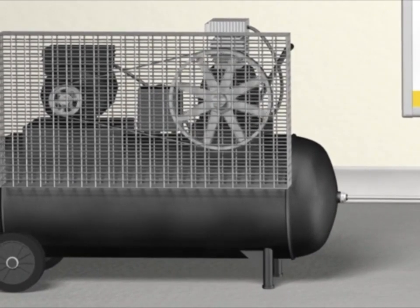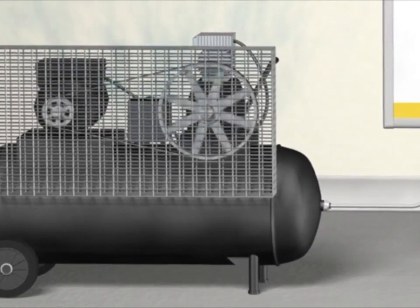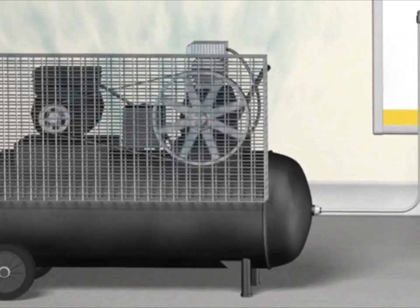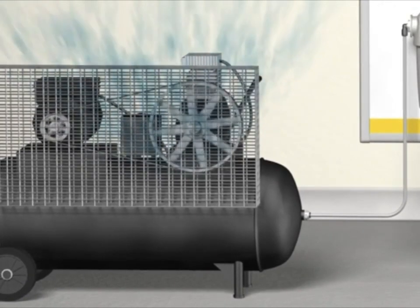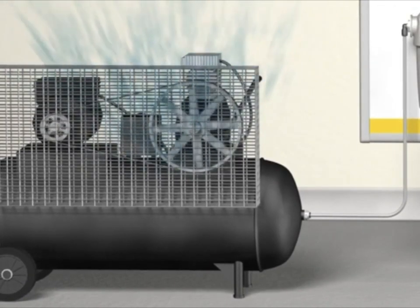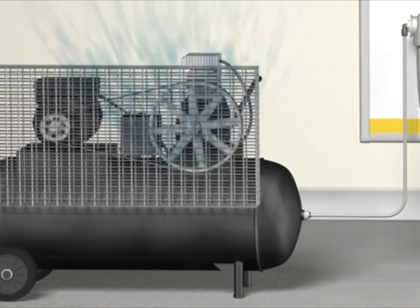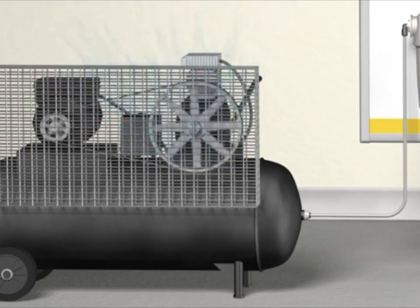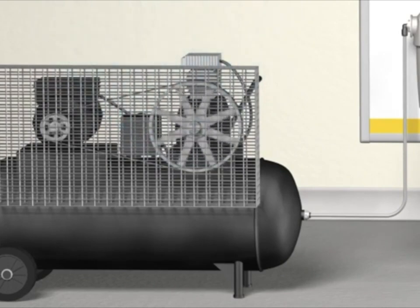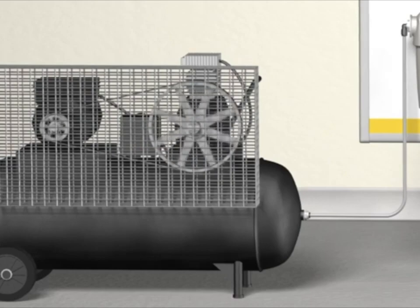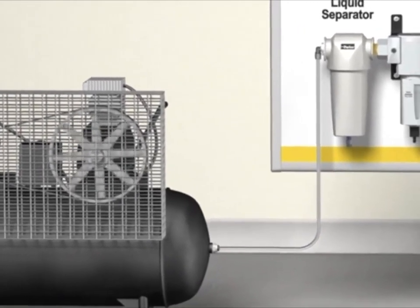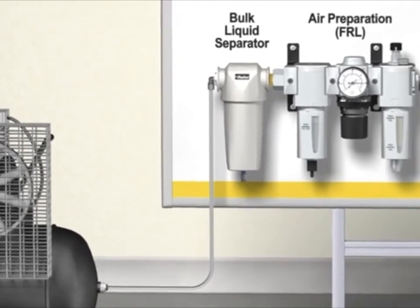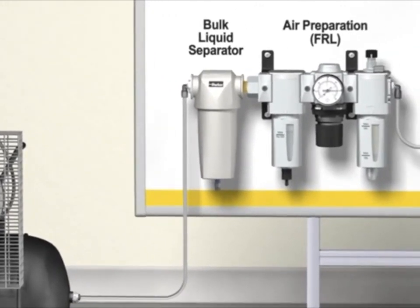The compressor generates the energy that powers the system in the form of compressed air. To generate compressed air, the compressor draws in atmosphere from its surroundings and squeezes it into a smaller space, creating the energy needed to drive the system. Once compressed, the air needs to be dried and cleaned so that harmful particulates such as rust or dirt do not clog up the moving parts in the system.